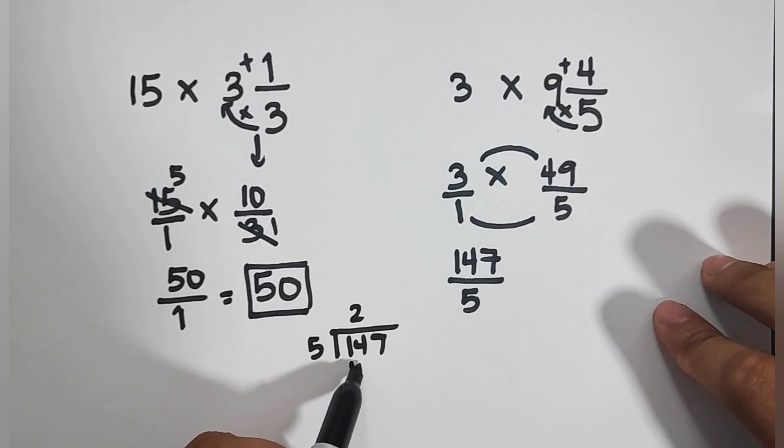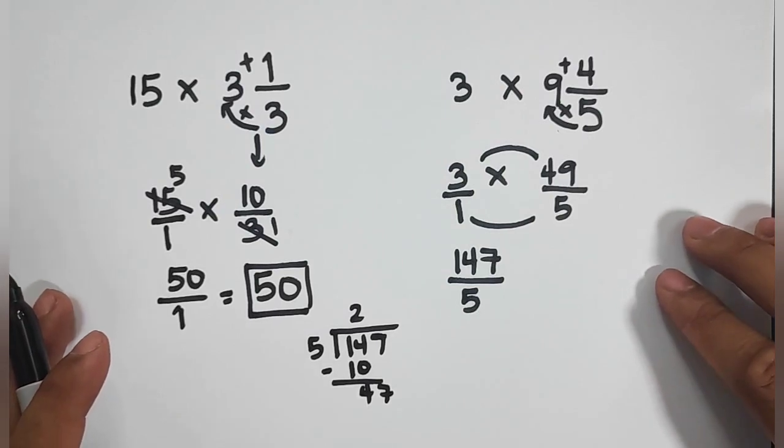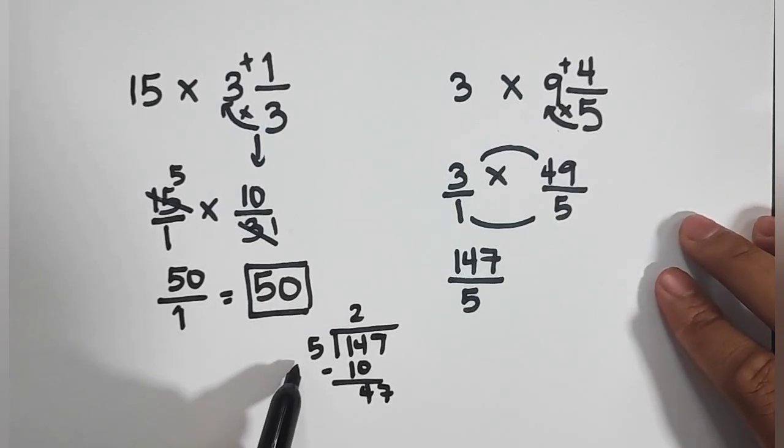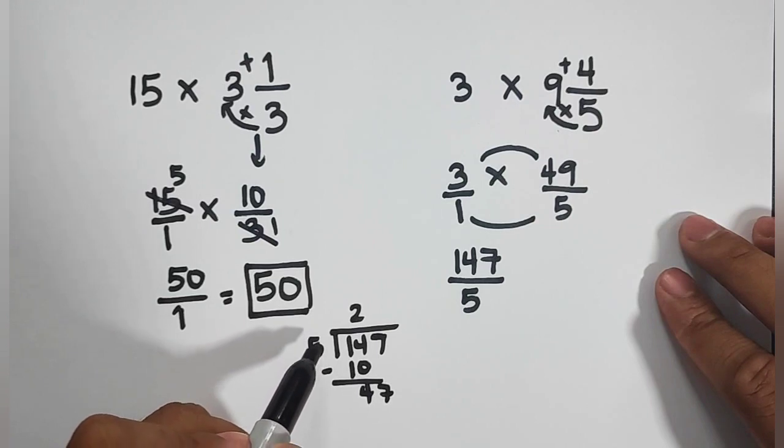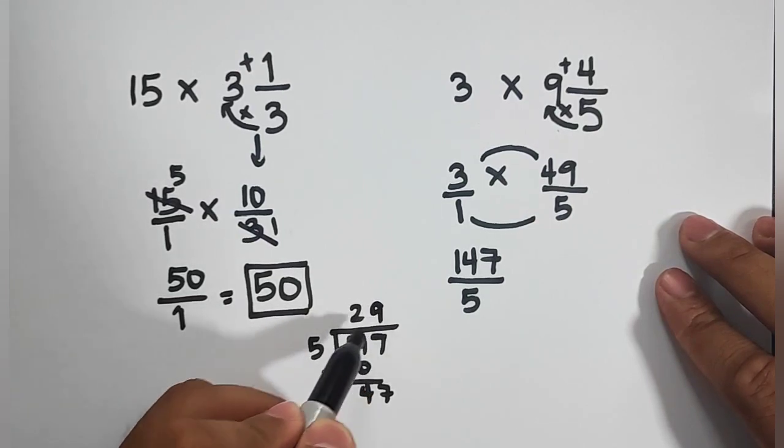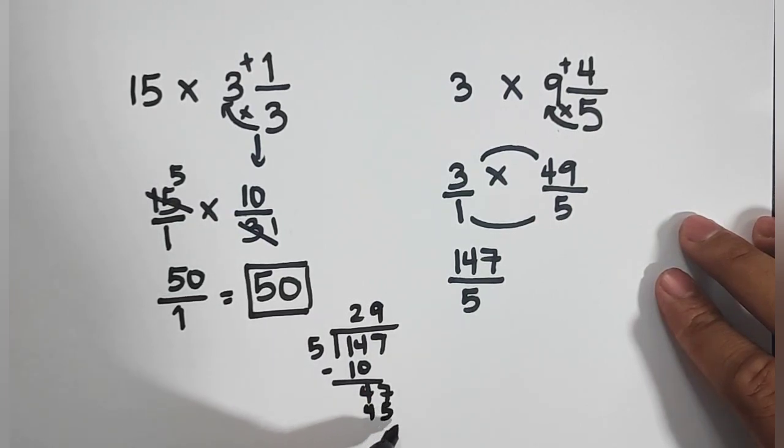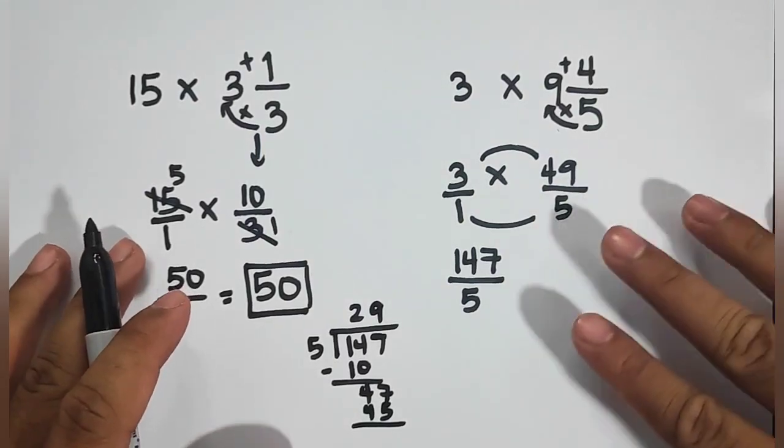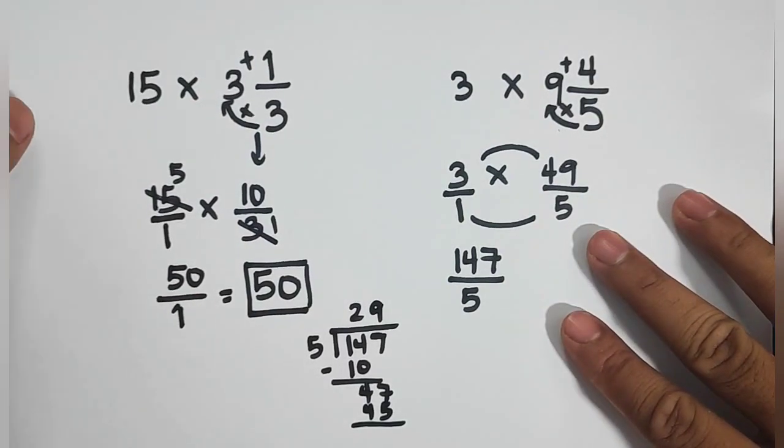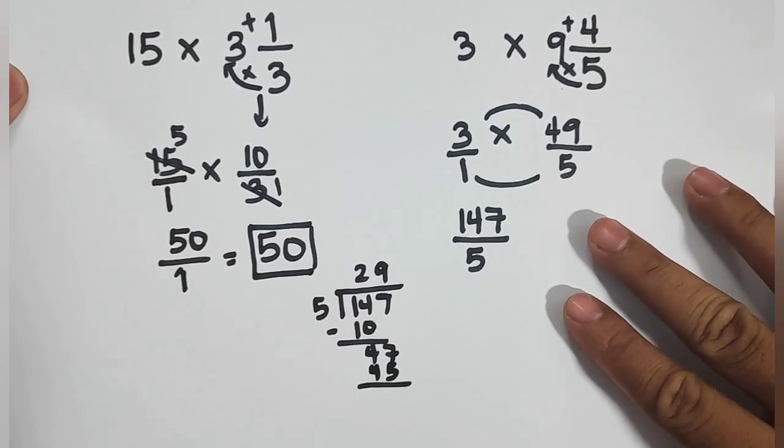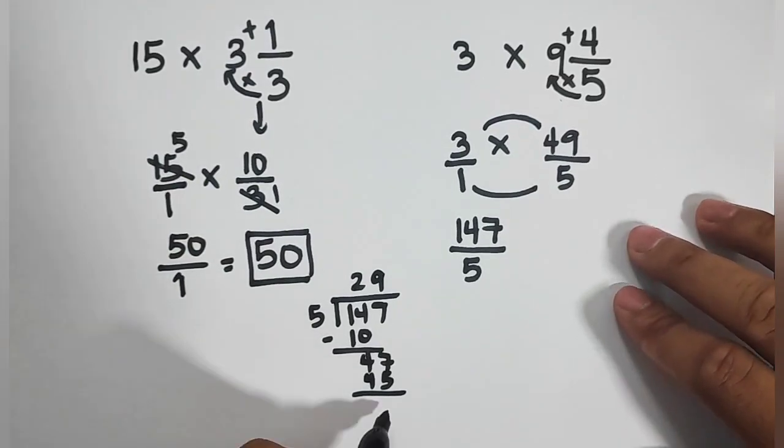So what we have now is, this is 4, window 7. What's next is, 47 divided by 5, that is equal to 9. This is 45. And as you can see, our difference here is equal to 2. This is our remainder.